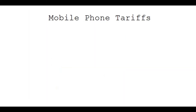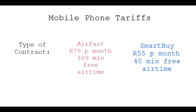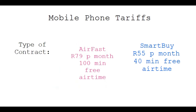Now, imagine I'm going into the phone shop and I must buy a cell phone and get a type of contract. I could choose between Airfast or Smartbuy. If I choose Airfast, it's going to cost me 79 rand per month, and the first 100 minutes of phone calls are free. If I choose Smartbuy, it's going to cost me 55 rand a month — cheaper — but I only get 40 minutes of free airtime per month.